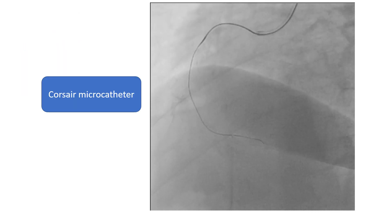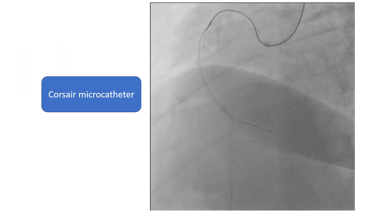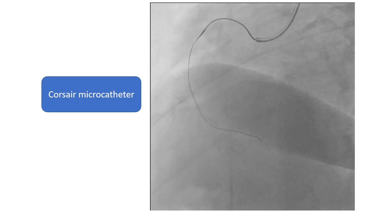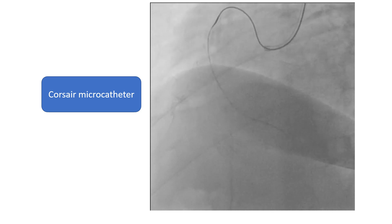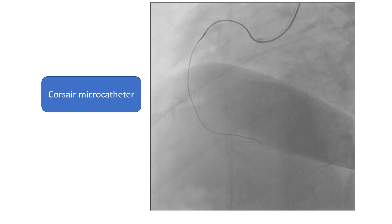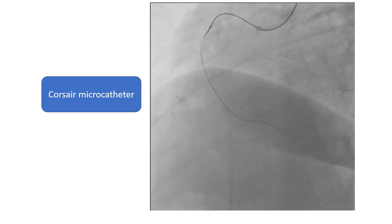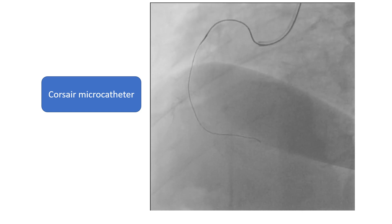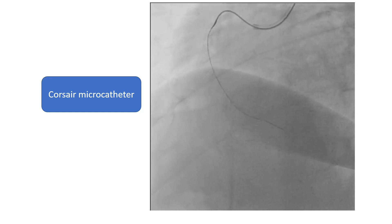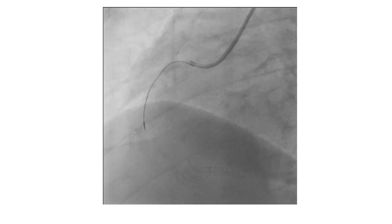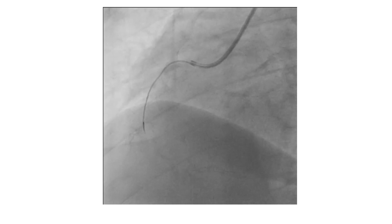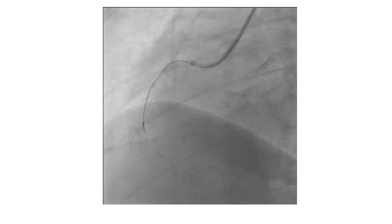Here we are using a Corsair microcatheter to cross the lesion. The advantage of this microcatheter is that you can rotate it several times clockwise and counterclockwise until you cross the lesion. Finally, the lesion is crossed. The workhorse wire was pulled back and exchanged through the microcatheter for the rota wire, and the microcatheter was pulled back.